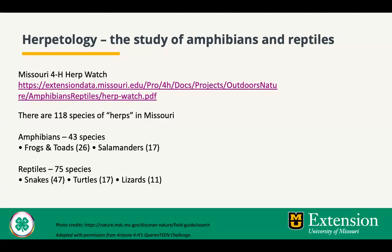There are 118 total species of amphibians and reptiles in Missouri. There are 43 species of amphibians, including 26 frogs and toads and 17 salamanders. There are 75 species of reptiles, including 47 snakes, 17 turtles, and 11 lizards.